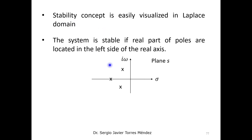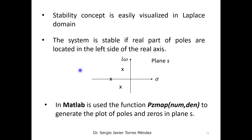Poles are very important because they are related to the stability concept. In the s-plane, which has a real component and an imaginary component, if the poles from the denominator polynomial have negative real parts — meaning they lie on the left side of the plane — the system is called stable.